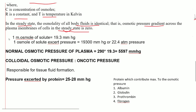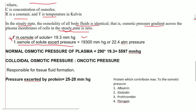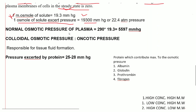One milliosmol of a solute exerts a pressure of 19.3 mmHg. Therefore, 1 osmol exerts 19,300 mmHg or 22.4 atm. The normal plasma osmolality is 280–290 mOsm/kg, which corresponds to a normal plasma osmotic pressure of approximately 5,597 mmHg (290 × 19.3).